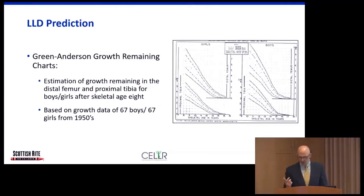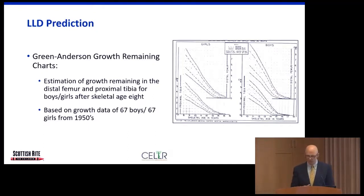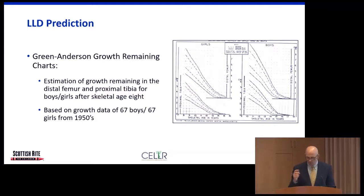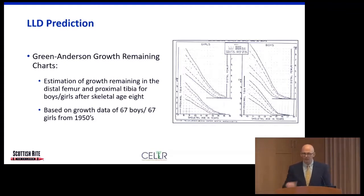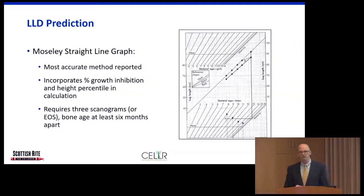The Green-Anderson growth remaining charts are well known but not used as much anymore, partly because they were derived from only 67 boys and 67 girls from the 1950s — a very select population that doesn't represent today's diverse children. The Moseley straight-line graph is the most accurate method for predicting limb length discrepancy at maturity, but requires at least three measurements of lower extremity length separated by at least six months, each with an associated bone age from a hand or elbow radiograph.